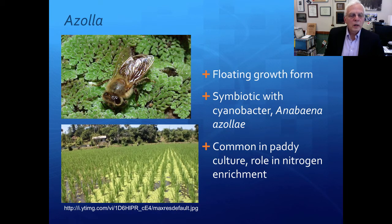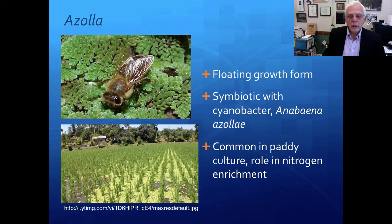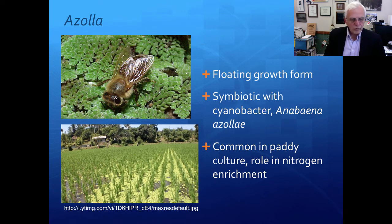Azolla is another one. This has a floating growth form — you can see its very complex leaf structure. It has a symbiotic cyanobacterium called Anabaena azollae that lives within the structure of the plant. This is very common in rice paddy culture. Here you see a lot of Azolla in a rice paddy. One of the neat things about Azolla is that, like many other cyanobacteria, it can fix nitrogen with this cyanobacterium Anabaena azollae. That allows it to enrich the nitrogen in the paddy culture.